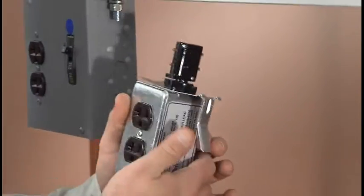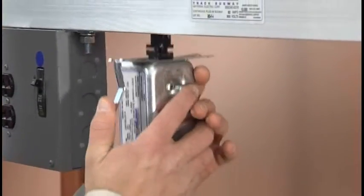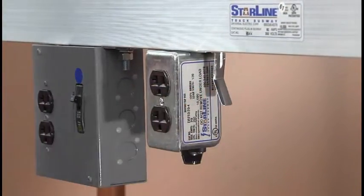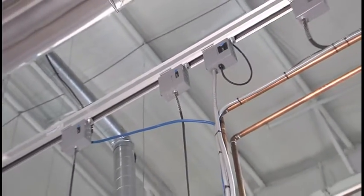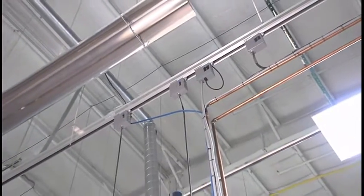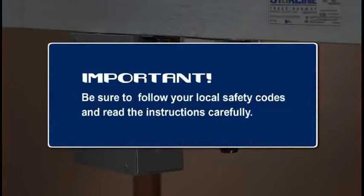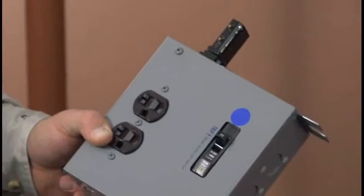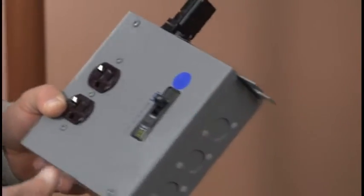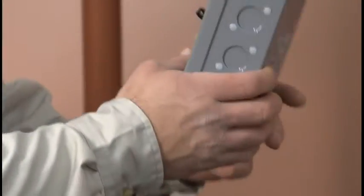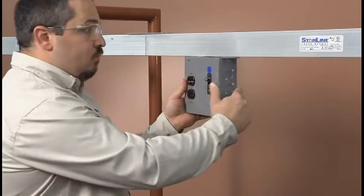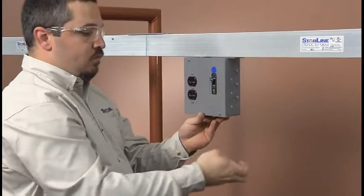Starline Track Busway offers a wide variety of plug-in units that fit any need. The busway can be tapped instantly at any location, saving you time and labor costs. First, be sure to follow any safety codes that may apply. Make sure that the label on the plug-in unit is on the same side as the polarizing strip on the busway. Then, just insert, twist, and install the hanger bolt.